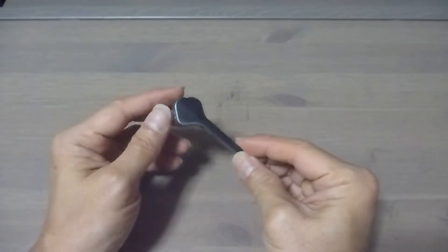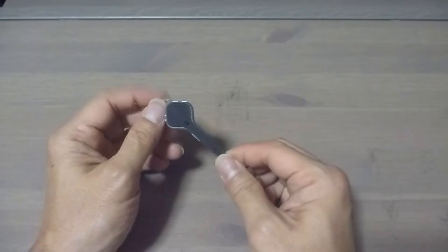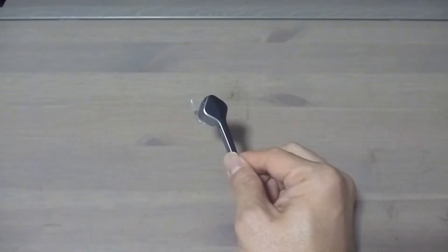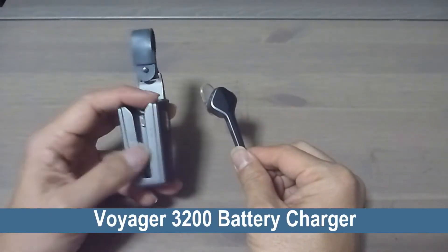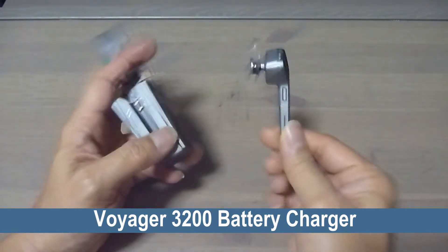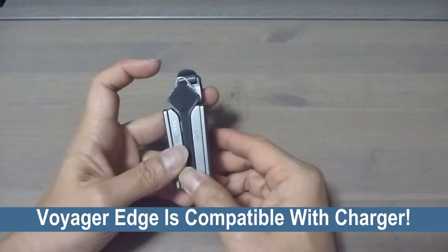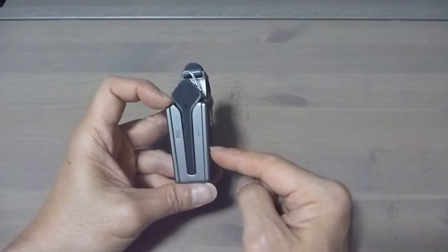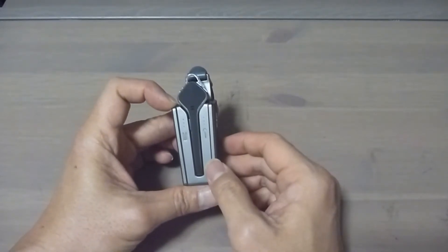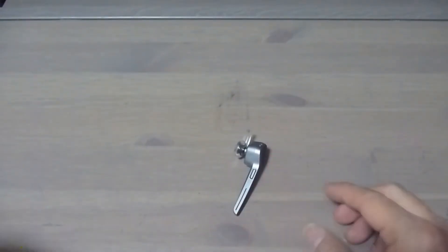So if you have watched my other video, we have done the review for the Plantronics Voyager 3200 series. The Voyager 3200 series comes with a charger itself. And guess what, the Voyager Edge is compatible. You are able to use the portable charger from the Voyager 3200 series. So that's the first thing that we want to highlight.